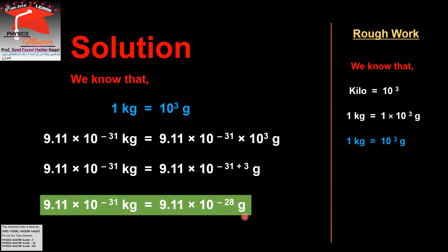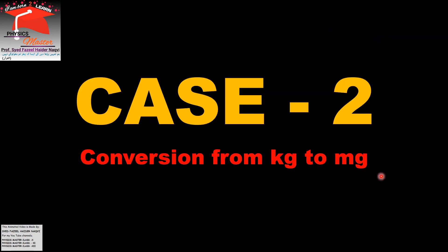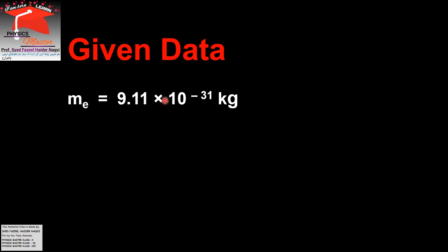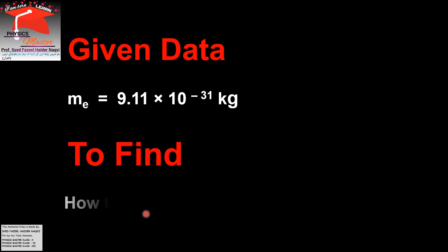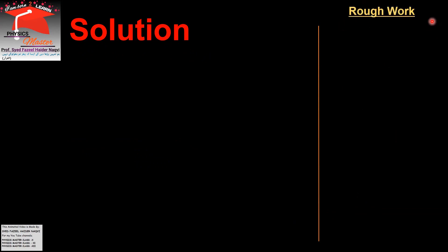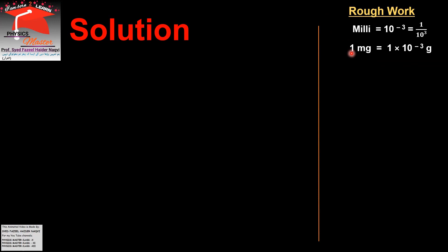Case 2: Conversion from kilogram to milligram. The mass of an electron is 9.11 into 10 to the power minus 31 kg, to be converted into milligrams. Given data: 9.11 into 10 to the power minus 31 kg. To find: how to convert 9.11 into 10 to the power minus 31 kg into milligrams. Solution heading — right side. Rough work heading: from the prefix table, milli is equal to 10 to the power minus 3.